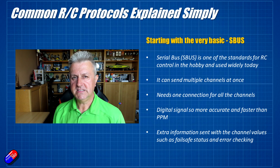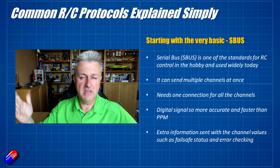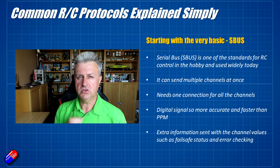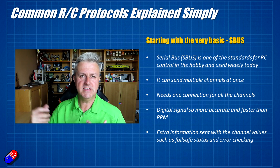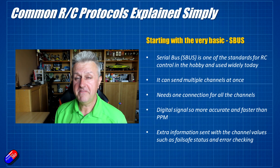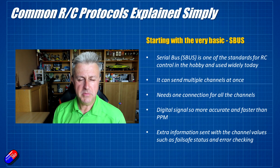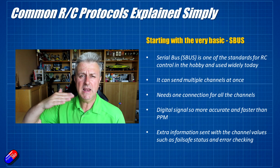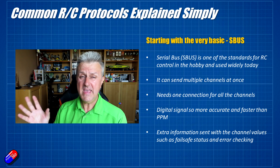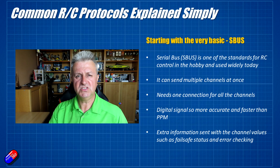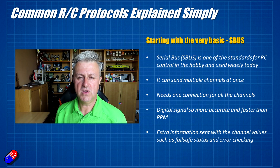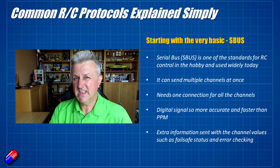Another massive advantage with SBUS is that because it's a packet of information, you can also insert and send extra information. You can do error checking to make sure the information received is actually correct. You can also have flags set up — bits at the end that can be turned on or off — which can tell you whether you're in failsafe. Back in PWM and PPM land you had to set a wacky value on a channel and tell the flight controller that if it hears that value something bad has happened. With SBUS, you don't need to do that — as soon as the connection has a problem, the failsafe bit is sent along with all the other information, and the flight controller or stabilizer immediately initiates whatever failsafe action you've set up.